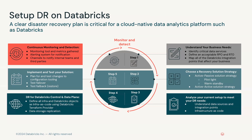Then you need to analyze the current setup — understanding all the different integration points, where the data sits, what your systems are today, and how much automation you have. If you have infrastructure as code today, that's going to change the way you implement DR. Step four is defining the Databricks-specific objects for your chosen DR strategy. Then step five is the implementation, which is what we're talking about today. Finally there's monitoring and detection — always looking at what's happening with your environment, deciding when a failover needs to happen, and adapting your DR strategy over time as your business grows and your needs change.